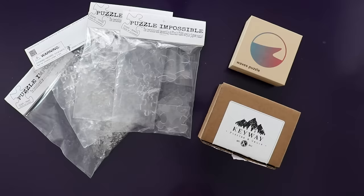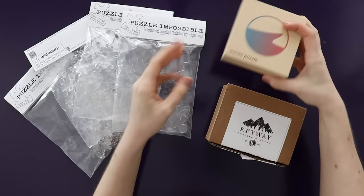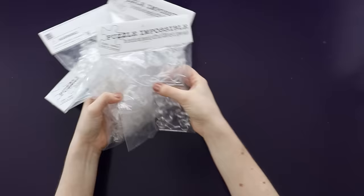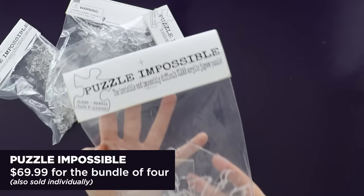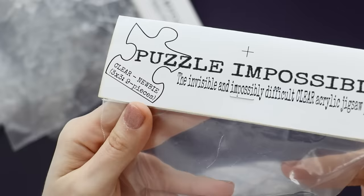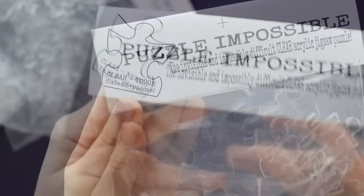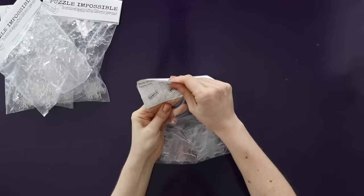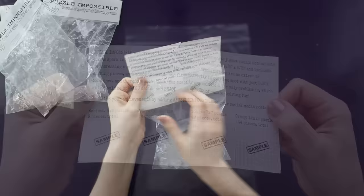So here are all the puzzles that I'm doing today. There's the waves puzzle, which was sent to me. I also have this keyway puzzle, which was also sent to me. But first, we're going to start with the Puzzle Impossibles, which I bought with my own money and I will have links to everything down below. So these come in four different sizes. The newbie, which is nine pieces. The tough, which is 25 pieces. This is hard, which is 49 pieces, and crazy, which is 144 pieces. They all come in Ziploc bags with a tag stapled to the top.